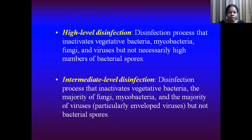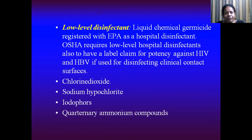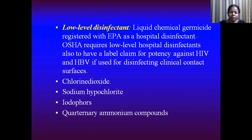High-level disinfection is the process that inactivates vegetative bacteria, mycobacteria, fungi, and viruses but not necessarily high numbers of bacterial spores. Whatever the type of disinfection procedure, it does not eradicate the spores — that you have to understand. Intermediate-level disinfection inactivates vegetative bacteria, fungi, mycobacteria, and the majority of viruses but not bacterial spores. Low-level disinfectants are liquid chemical germicides registered with the EPA as hospital disinfectants. Commonly used disinfectants are chlorine dioxide, sodium hypochlorite, iodophores, and quaternary ammonium compounds.